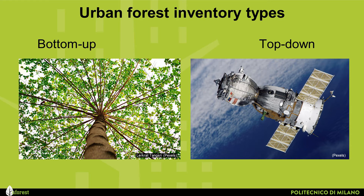A bottom-up inventory generates primary data from on-the-ground inventory methods, as opposed to aerial or satellite imagery. This approach requires a process of measuring individual tree characteristics and quality assurance and control. Field data collection requires extensive planning, management and time. Although it can be costly, the results can provide more information than possible through top-down analysis, making it beneficial to perform a bottom-up inventory at some stage of the urban forest inventory.